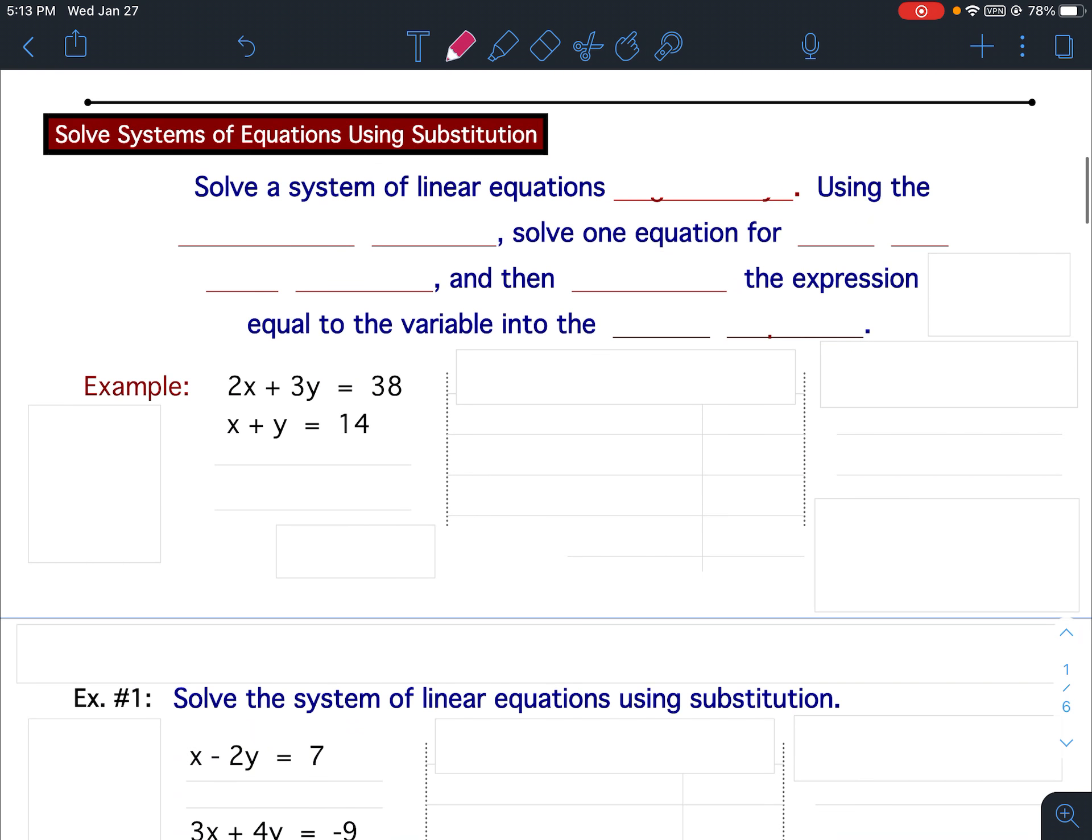Alright, today's lesson is on Solving Systems of Equations Using Substitution. We started with using graphing, where if the graphs intersected, if the two lines intersected, they were one solution and the solution was the ordered pair, the x and y value. Or if they were parallel lines, it was no solution. If it was coincident lines, in other words one line on top of the other, the same line, it was infinitely many solutions.